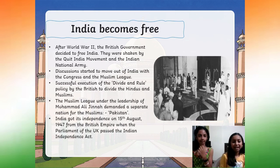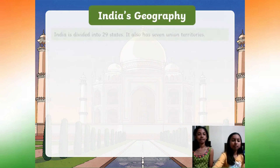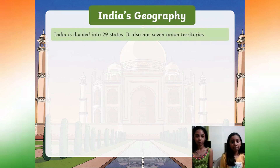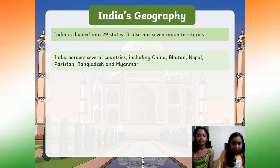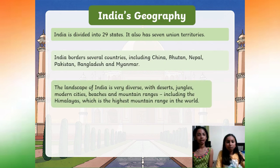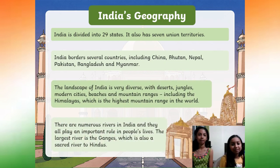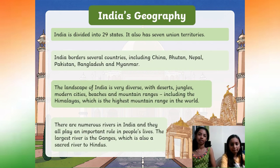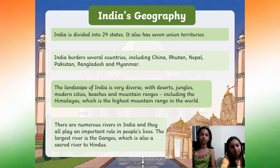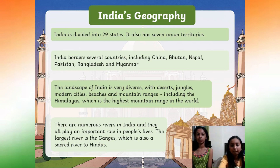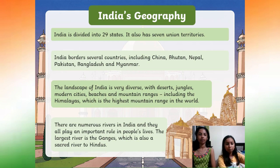Indian Independence Act. India is divided into states and also has 7 union territories. India borders several countries including China, Bhutan, Nepal, Pakistan, Bangladesh, and Myanmar. The landscape of India is very diverse, with deserts, jungles, modern cities, beaches, and mountain communities including the Himalayas, which is the highest mountain range in the world. There are numerous rivers in India and they all play an important role in people's lives.